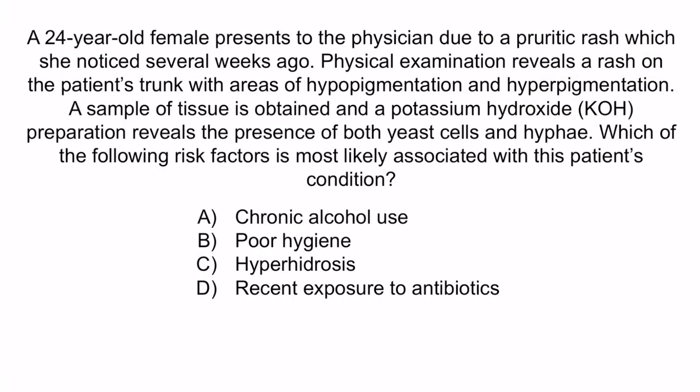A and B are red herrings, and D is often associated with Candida albicans, but not Malassezia furfur. So A, B, and D are incorrect, and again, the correct answer is C, hyperhidrosis. And with that, we've covered everything you need to know about Malassezia furfur.